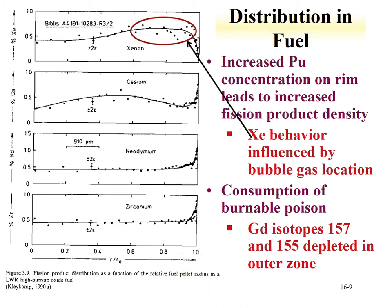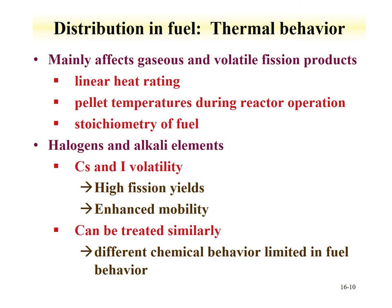Xenon shows a decrease right at the edge of the fuel because xenon is extremely volatile and will find locations with voids and congregate there. There are also variations in burnable poison: gadolinium isotopes 157 and 155, used as burnable poisons, tend to be depleted in the outer zone. Thermal behavior mainly affects gaseous and volatile fission products. Neodymium and zirconium, which are not volatile, are not influenced as much as the gaseous and volatile fission product species.